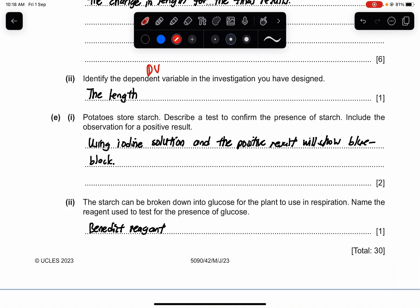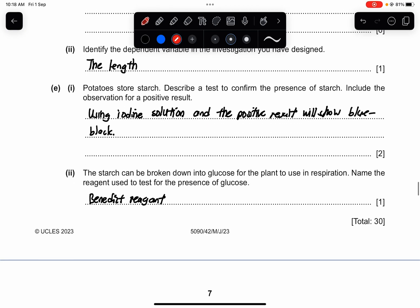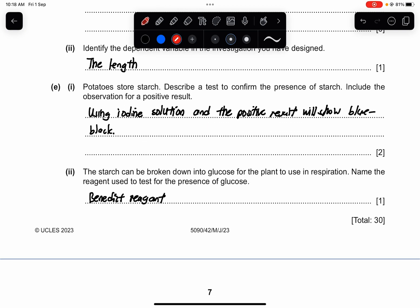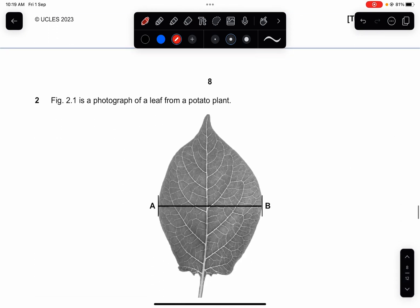Part E1. Potatoes store starch. Describe a test to confirm the presence of starch. Include the observation for a positive result. So using iodine solution and the positive result will show blue-black in colour. Part 2. The starch can be broken down into glucose for the plant to use in respiration. Name the reagent used to test for the presence of glucose which is the same as reducing sugars actually. So the answer for this will be Benedict reagent.